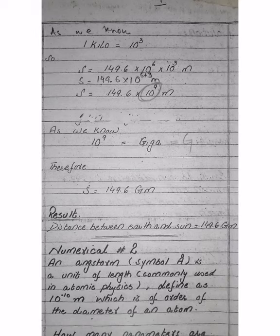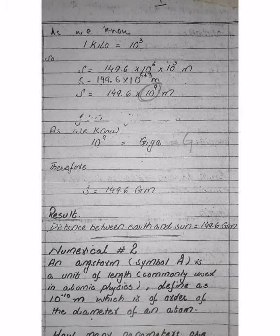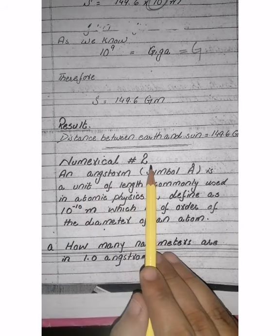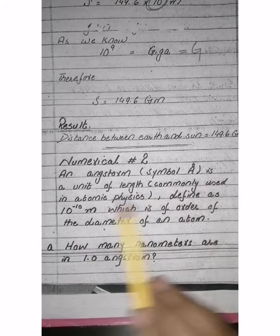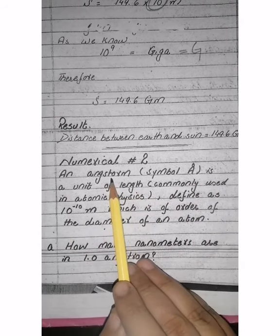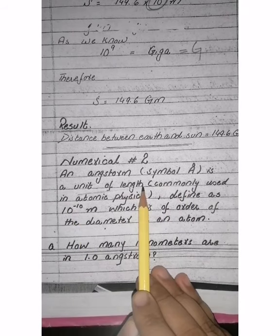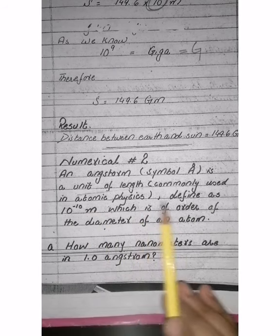Numerical number 1 is complete — it had three parts. Kindly practice these. Numerical number 2: an angstrom, symbol Å (a degree sign), is a unit of length commonly used in atomic physics, defined as 10 raised to the power of minus 10 meters, which is of the order of the diameter of an atom.